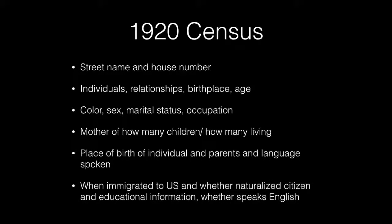The 1920 Census has the street name and house number, individuals' relationships, birthplace, and age, color, sex, marital status, occupation, the number of children a mother has had and how many are living, the place of birth of the individual and parents, and the language spoken. It also includes when they immigrated to the United States, whether they are naturalized citizens, educational information, and whether they speak English.